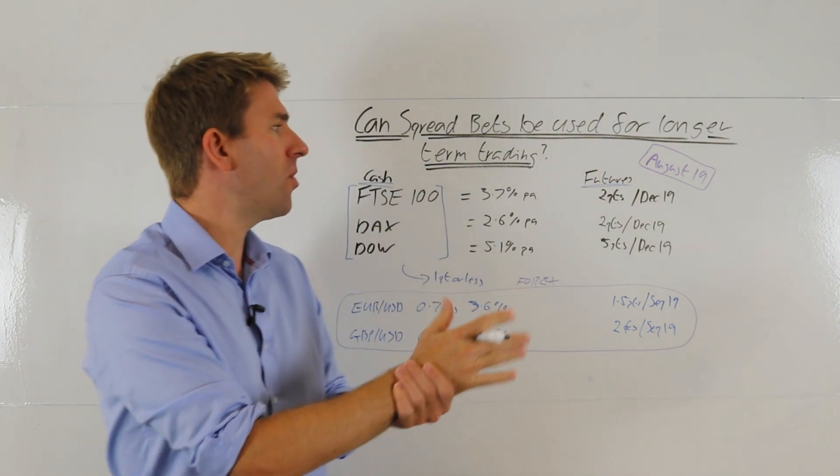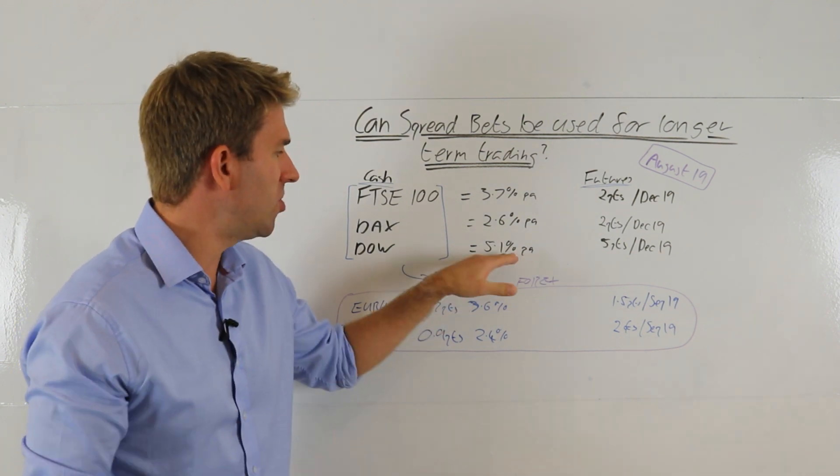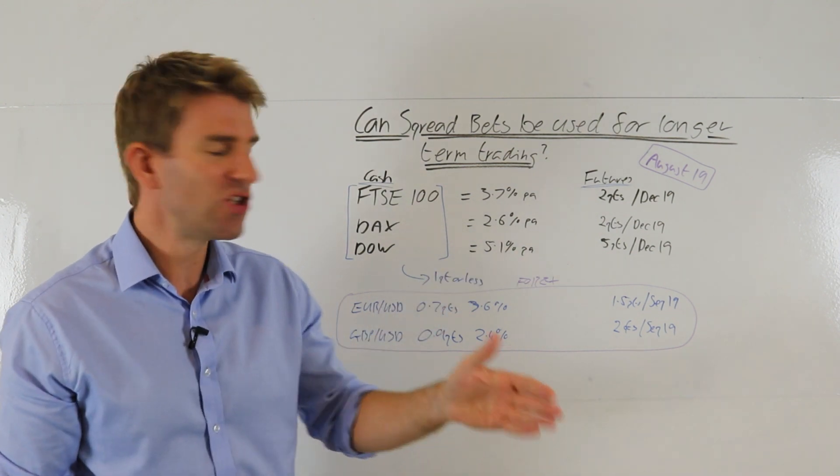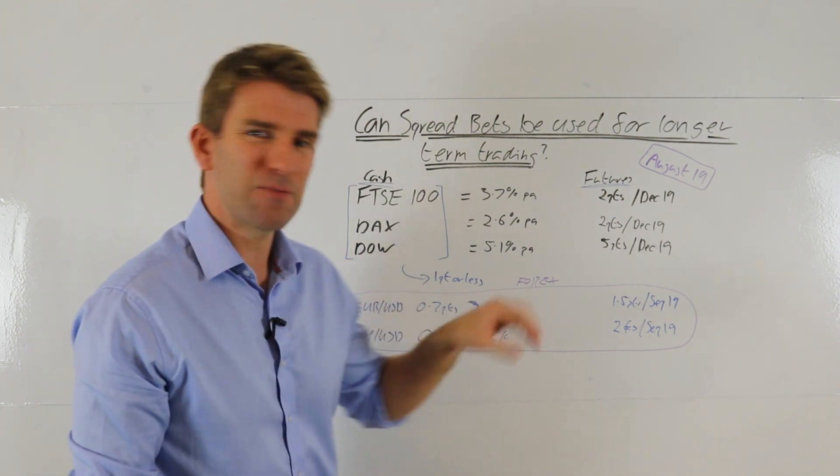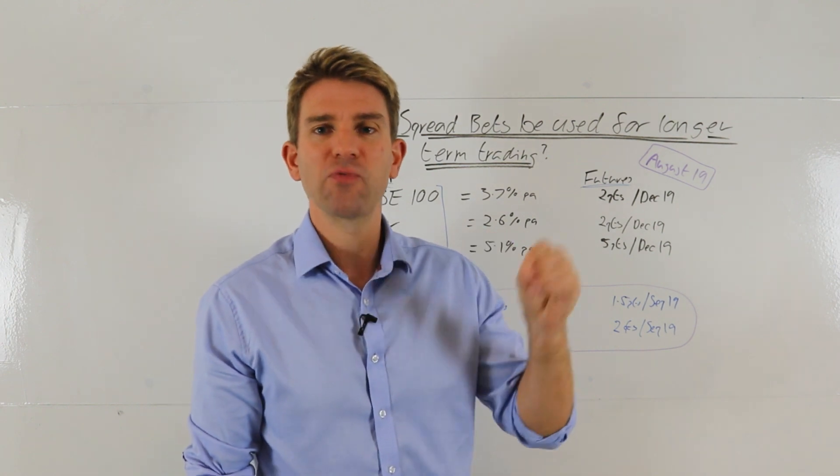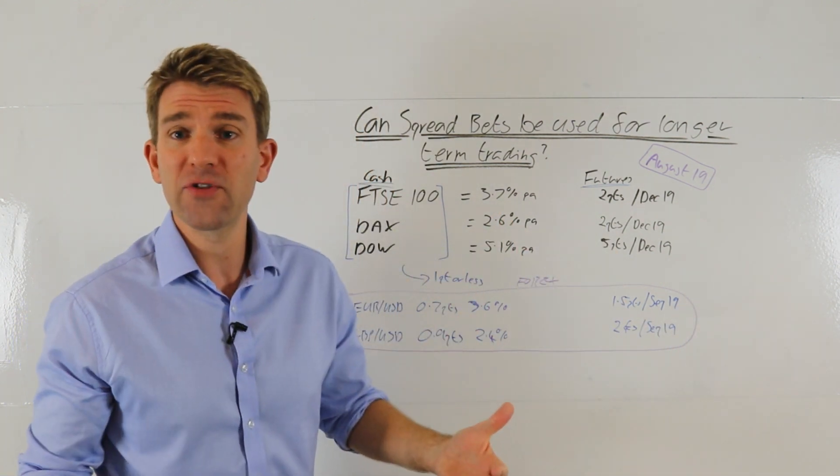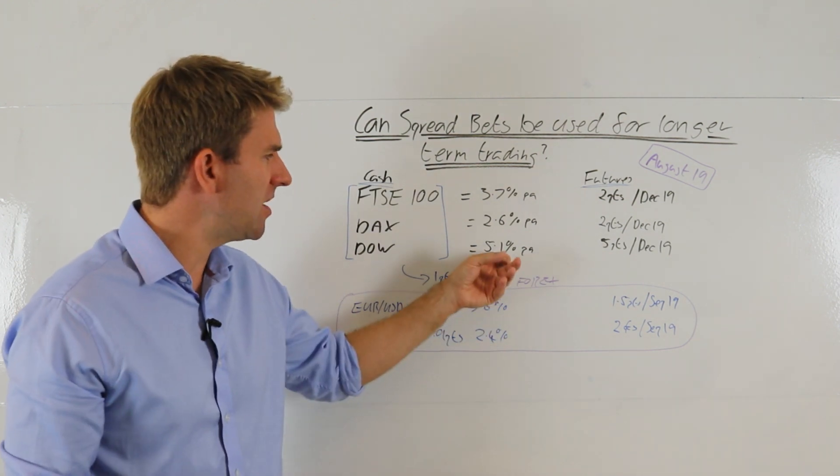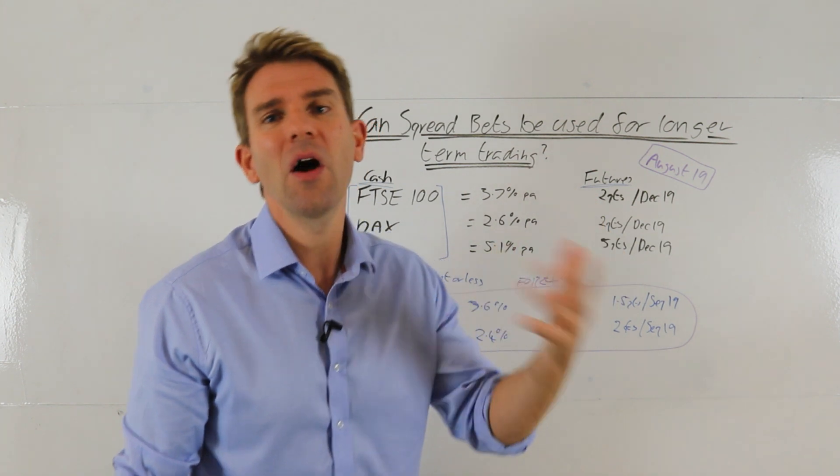So you can see, if you're holding something for let's say six months, you're going to be charged a reasonable percentage. And that's probably, for trading something like the DOW for example, that's probably not going to be the most efficient way of expressing that trade. If you've got a six-month trade view, or even if you say a four-month trade view or three-month trade view, the rollover costs are going to become quite large over time.